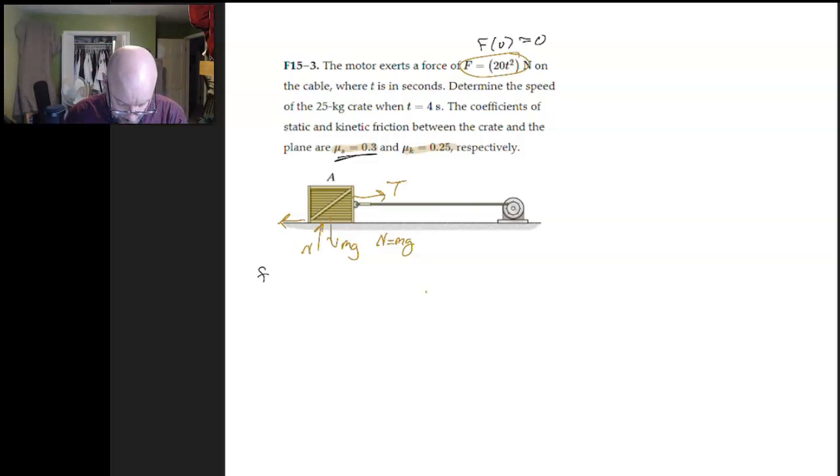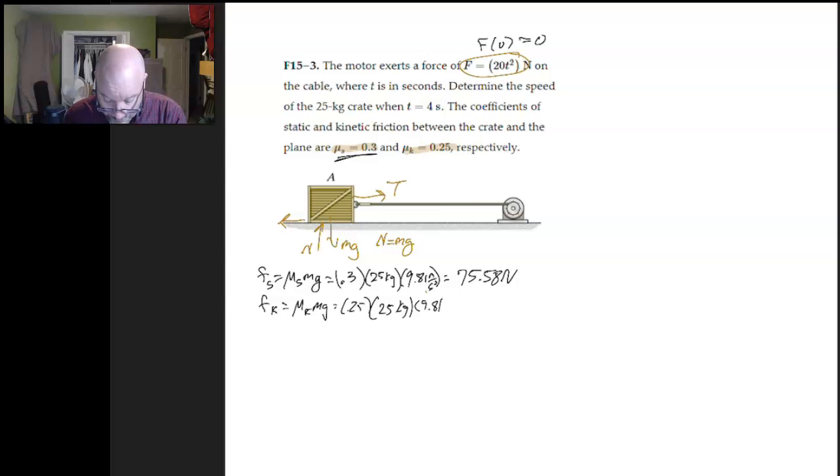So what we'll do in this case is go ahead and figure out what's the value of the static friction, what's the value of the kinetic friction. So the static friction, it's mu s times the normal force, which is mg. So that's going to be 0.3, our mass is 25 kilograms, and g, of course, is 9.81 meters per second squared. Now, you run all that out, and what you get is 75.58 newtons. Let's go ahead and get the kinetic friction while we're at it here. We'll do a similar process. Mu k, mg, 0.25, 25 kilograms, 9.81 meters per second squared, and that's a little bit less, 61.31 newtons.